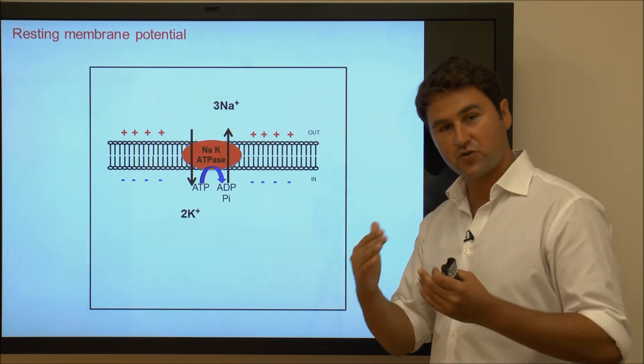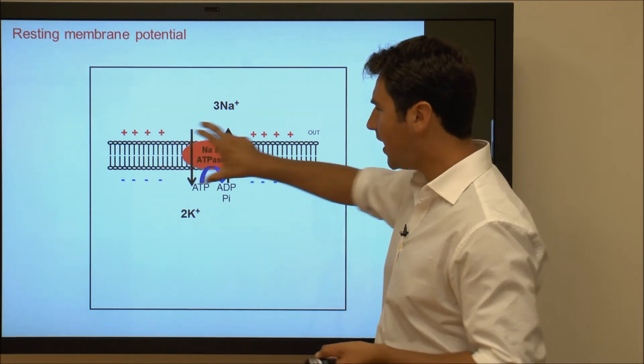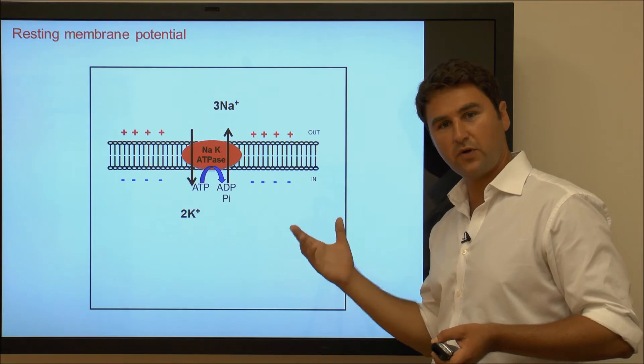Of course, positive and negative charges attract each other, but they can't cross the membrane. So they line up across the membrane, creating an electrical potential difference, otherwise known as voltage.